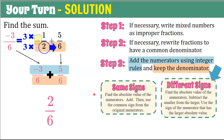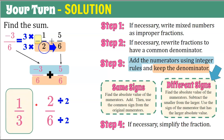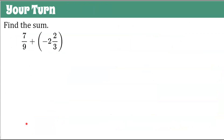Step four: simplify the fraction. Two-sixths is not in simplest form — both numerator and denominator are divisible by two. Two divided by two is one, six divided by two is three. So our sum in simplest form is one-third. Here's another problem for you. Pause the video, show all four steps, come back to check your work. Good luck.